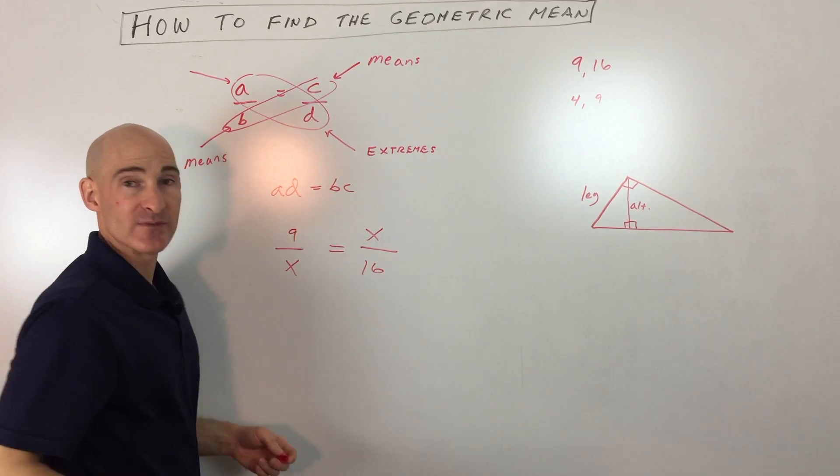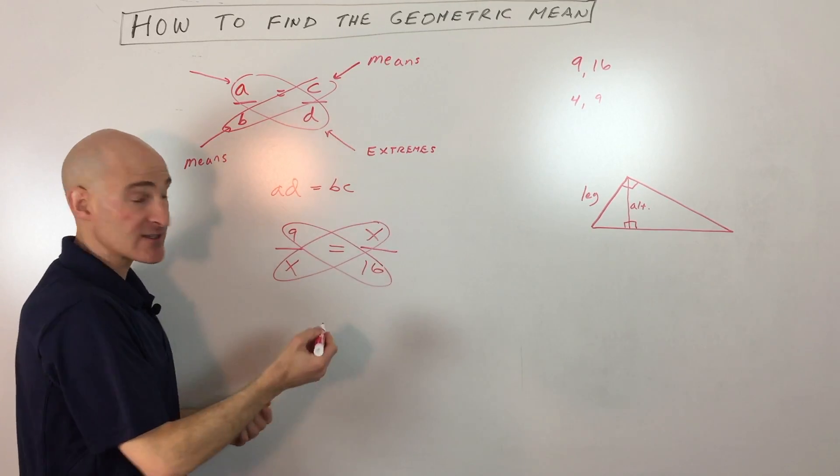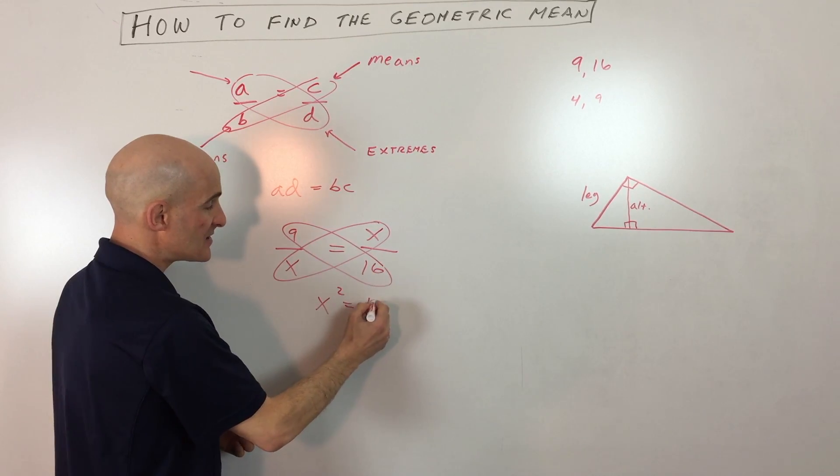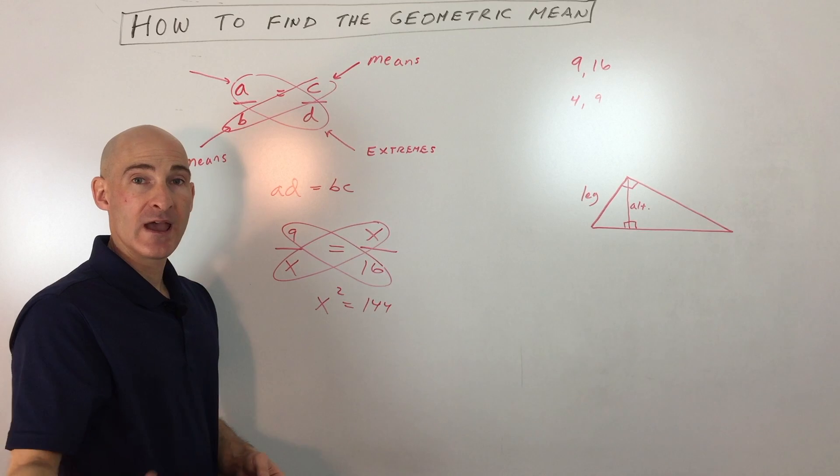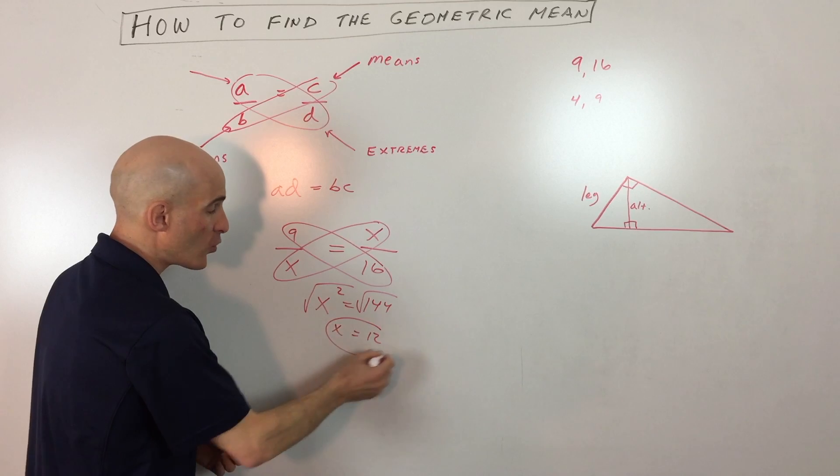And then all we have to do now is just cross-multiply and solve for X, and that's our geometric mean. So X times X is X squared, 9 times 16 is 144, and then if we take the square root of both sides, you can see that X is coming out to 12. So that's our geometric mean.